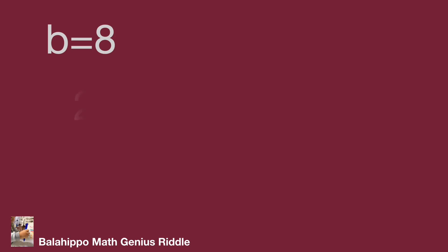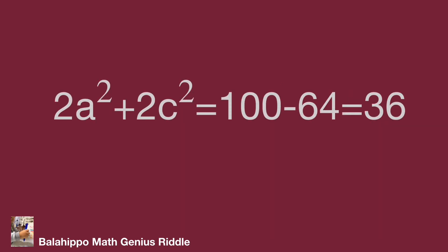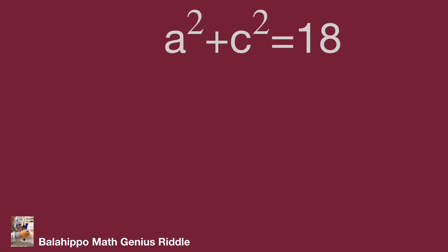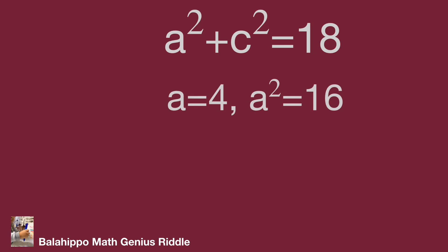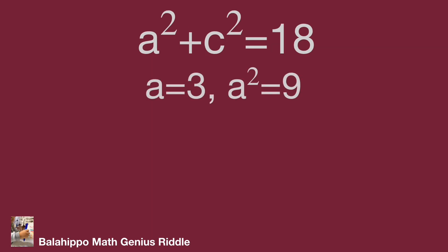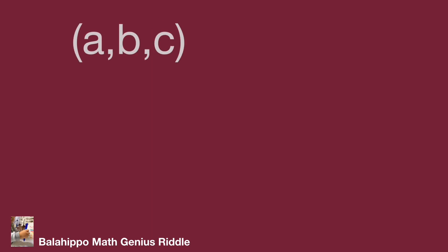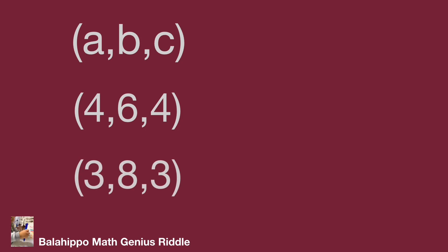With b equal to 8: substituting gives 2a squared plus 2c squared equal to 36, so a squared plus c squared equals 18. Trying a equal to 4 gives c squared equal to 2 — c is not an integer. Trying a equal to 3 gives c squared equal to 18 minus 9 equals 9, so c equals 3. We have found another number group for a, b, c: (3, 8, 3).